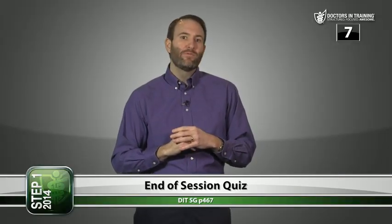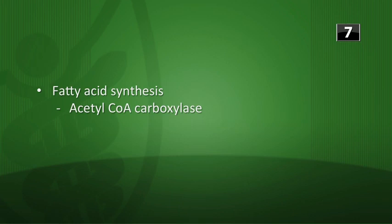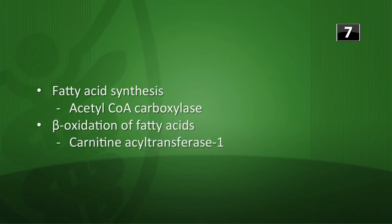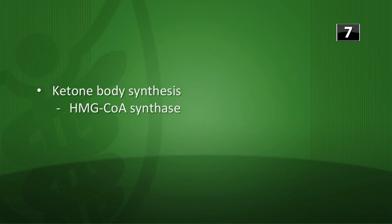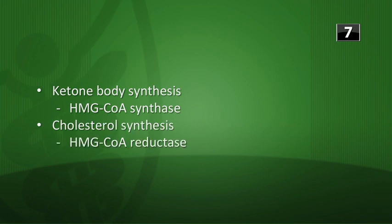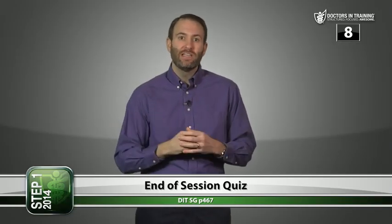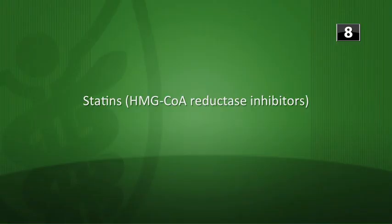Rate-limiting enzymes: fatty acid synthesis — acetyl-CoA carboxylase; beta oxidation of fatty acids — carnitine acyl transferase 1; ketone body synthesis — HMG-CoA synthase; cholesterol synthesis — HMG-CoA reductase. The group of medications that inhibits the rate-limiting enzyme of cholesterol synthesis is the statins — HMG-CoA reductase inhibitors. That brings us to the end of biochem 13.